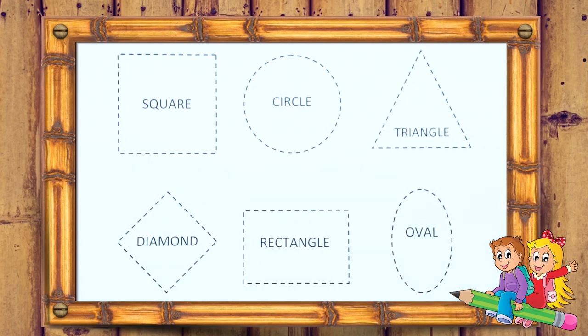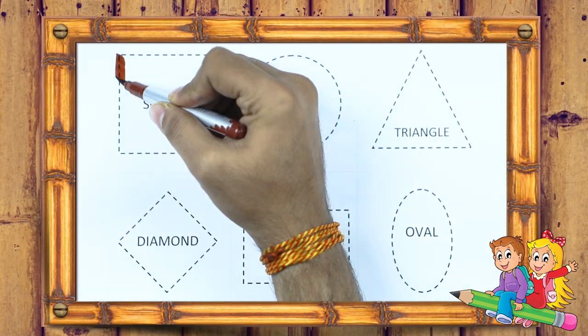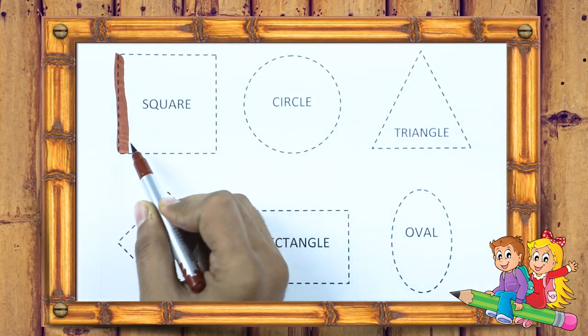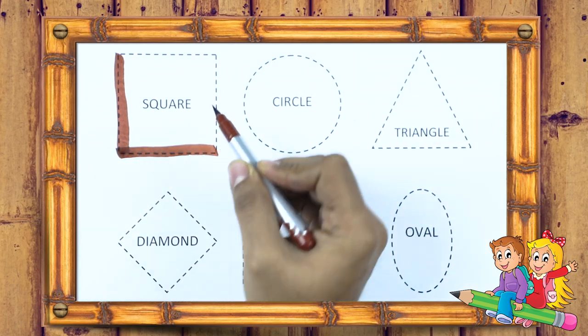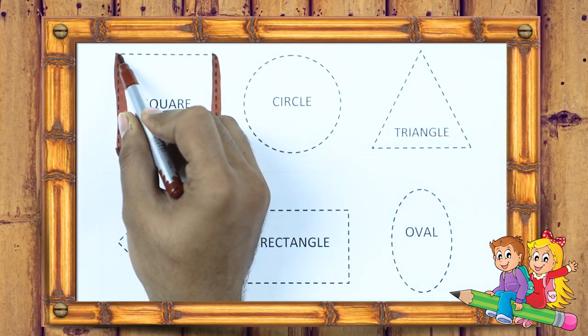It's a square. We draw square with brown color. Square.